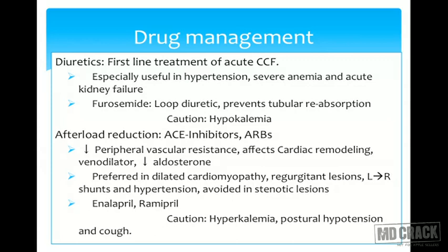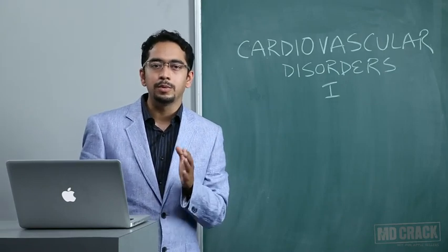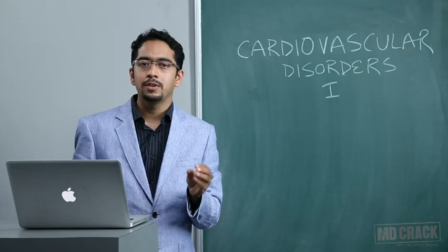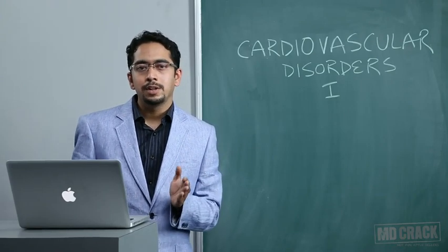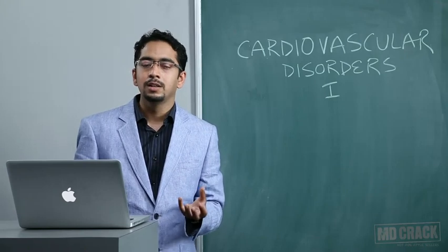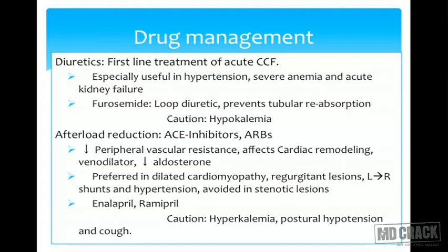Afterload-reducing agents are preferred in various congenital heart diseases such as left-to-right shunts like VSD and ASD. These include ACE inhibitors like enalapril and angiotensin receptor blockers like losartan. They reduce peripheral vascular resistance by preventing production of angiotensin 2, a prominent vasoconstrictor, leading to vessel dilation. This is also associated with low levels of aldosterone, minimizing salt and water retention, so we achieve afterload reduction and some preload reduction as well.